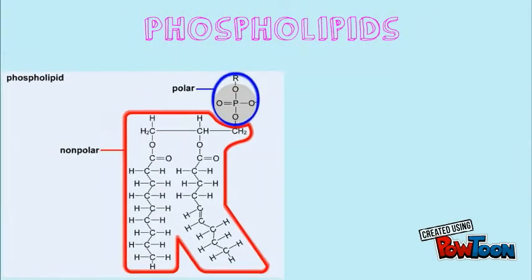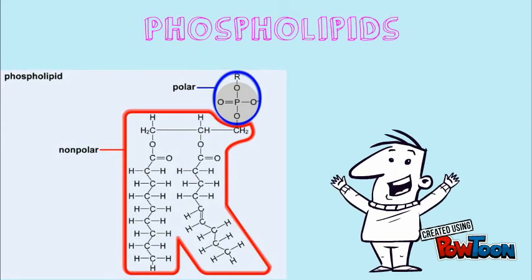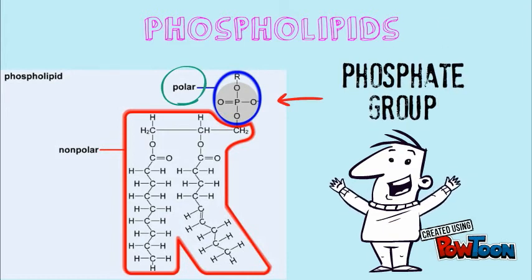Phospholipids are important molecules that provide structure and protection to our cells. They have one polar part, which is the phosphate group, and the rest is non-polar.